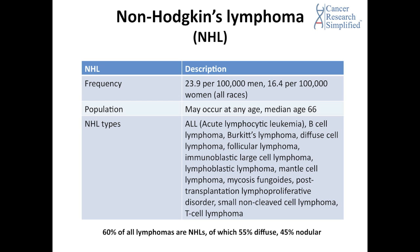Here are some of the types: ALL (acute lymphocytic leukemia), B-cell lymphoma, Burkitt lymphoma, diffuse large cell lymphoma, follicular lymphoma, immunoblastic large cell lymphoma, lymphoblastic lymphoma, mantle cell lymphoma, mycosis fungoides, post-transplantation lymphoproliferative disorder, small non-cleaved cell lymphoma, and T-cell lymphoma.